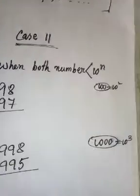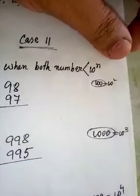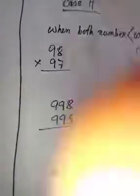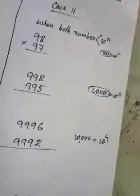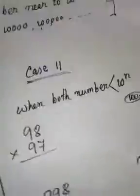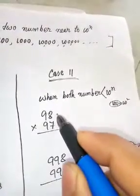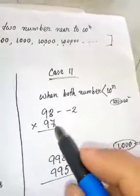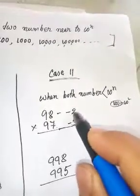When the number is less than 10 to the power n, if the base number is 10 to the power n and the two numbers are less than the base, the next step is the calculation of 100. So here we use minus 2, minus 3.